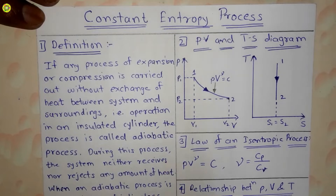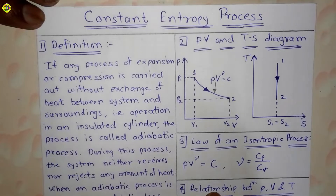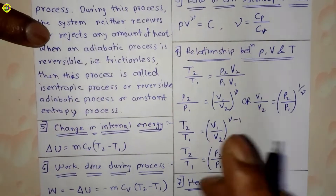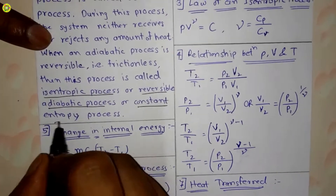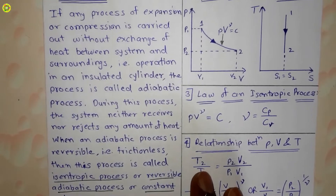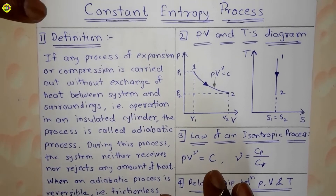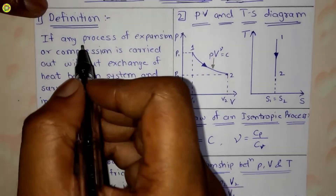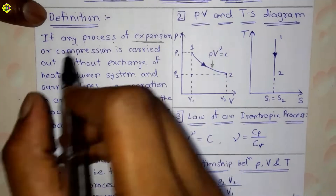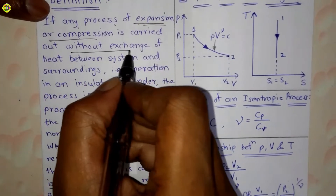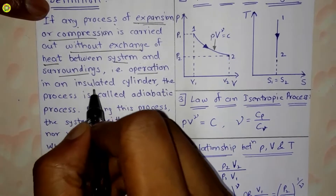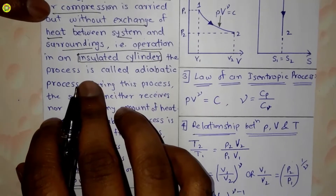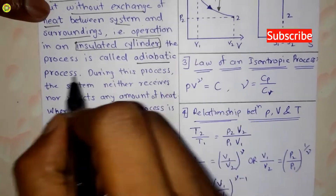Hi students, welcome. In this video we will study about the constant entropy process. The constant entropy process is also called the isentropic process or reversible adiabatic process. If any process of expansion or compression is carried out without exchange of heat between the system and surroundings, that is operation in an insulated cylinder, the process is called an adiabatic process.